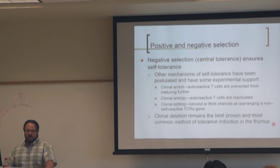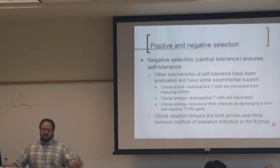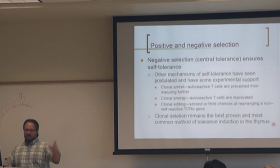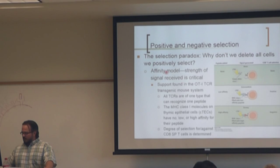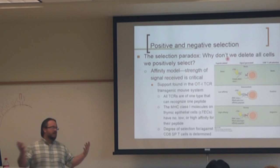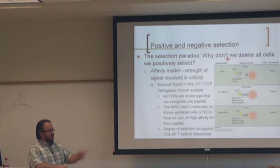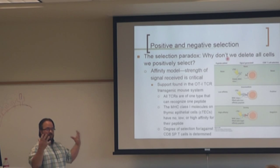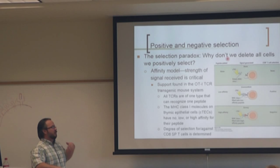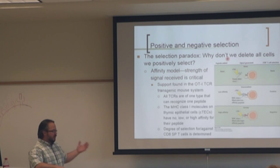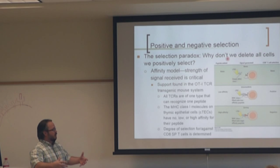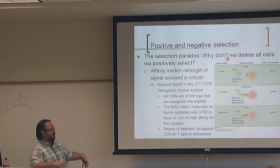If you delete macrophages from the thymus, you don't get that type of removal, so macrophages play a huge role in helping to remove all those dead cells. This raises the question: if positive selection selects for cells that recognize self to some degree, why aren't we then deleting all of those when they go into the medulla for negative selection? How do we both select for cells with some MHC specificity and then remove those with too much? The answer is largely dictated by the strength of the signal and how long the cell binds.